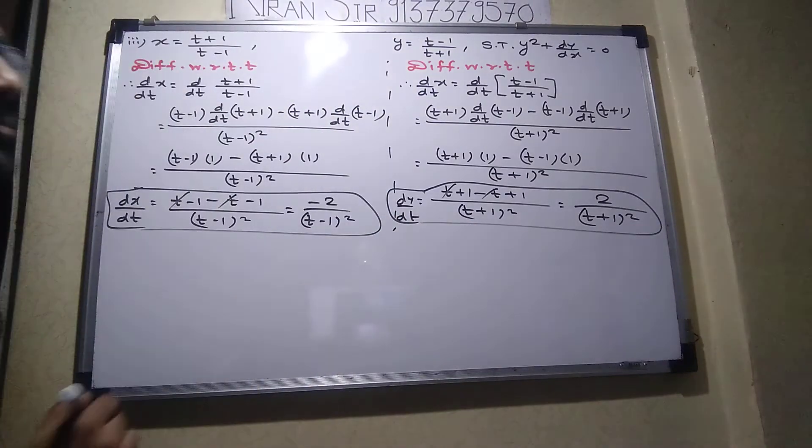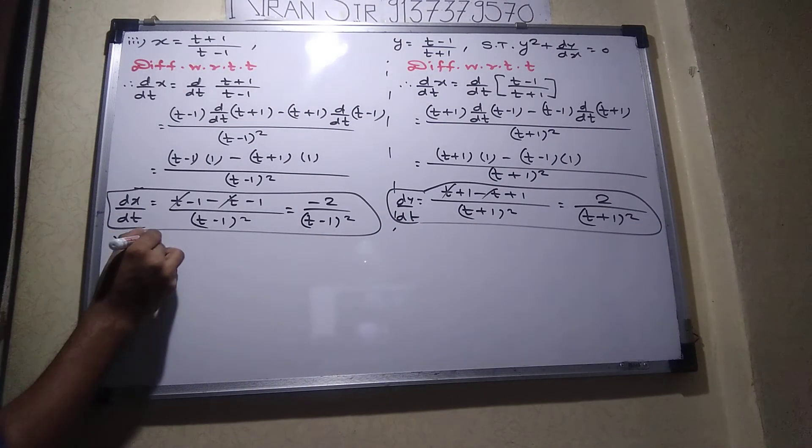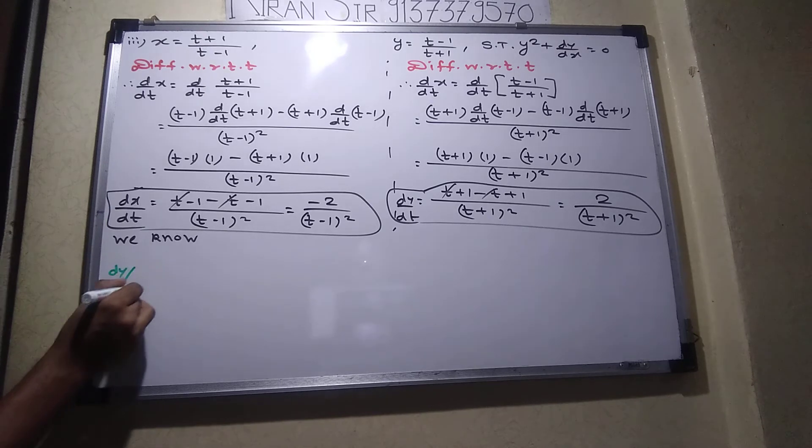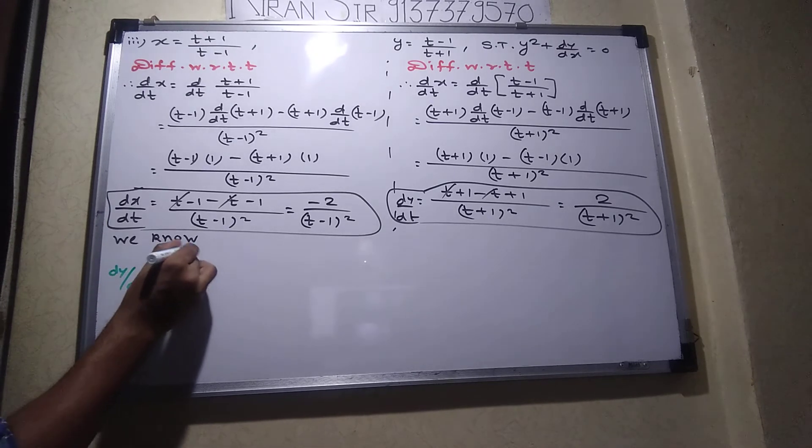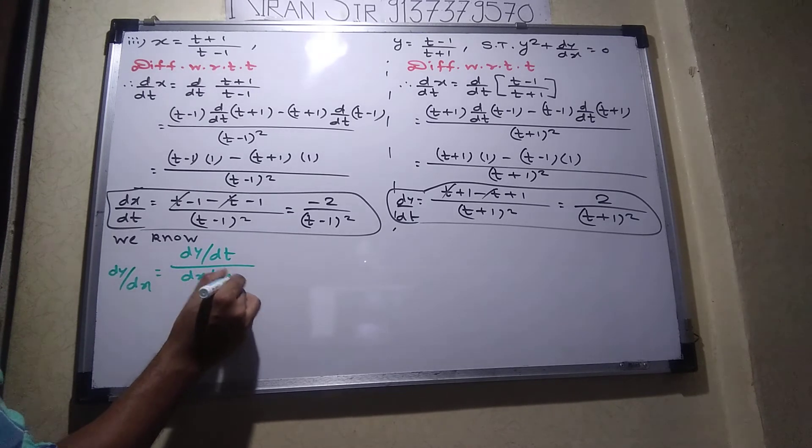Let me simplify. We know what formula? dy by dx equals to dy by dt the whole divided by dx by dt.